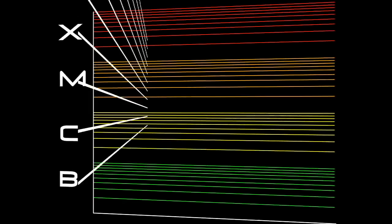Flares are classified according to their strength. The smallest ones are B-class, followed by C, M, and X, the largest. Similar to the Richter scale for earthquakes, each letter represents a tenfold increase in energy output. So an X is ten times an M, and a hundred times a C. Within each letter class, there is a finer scale from one to nine.